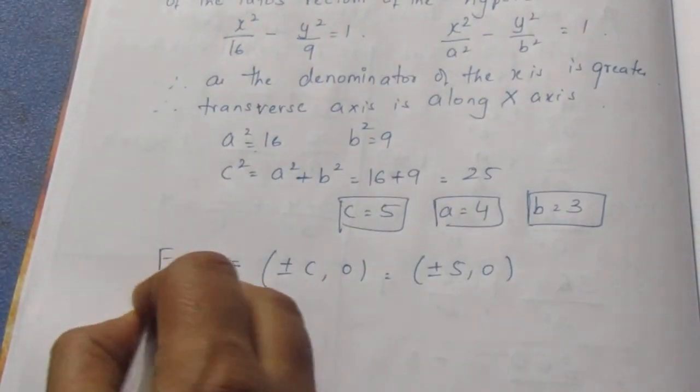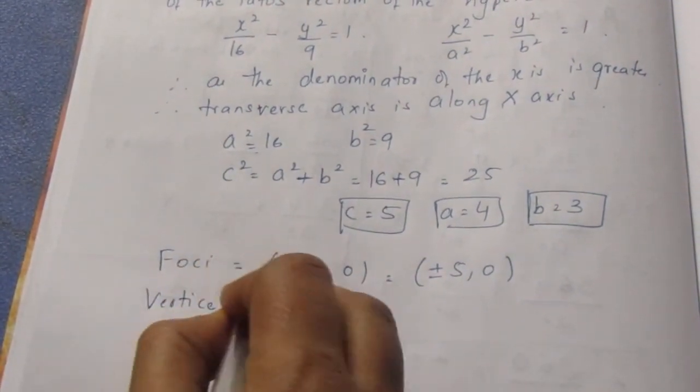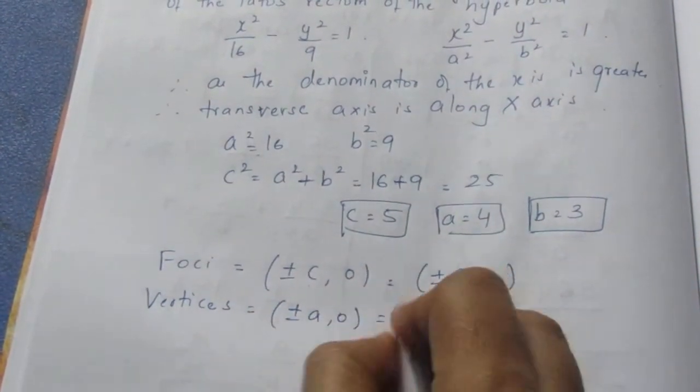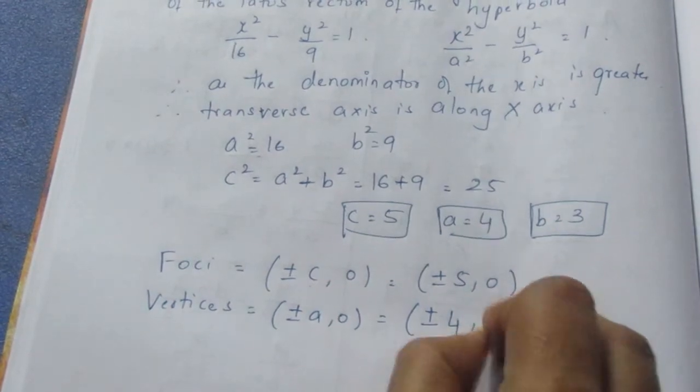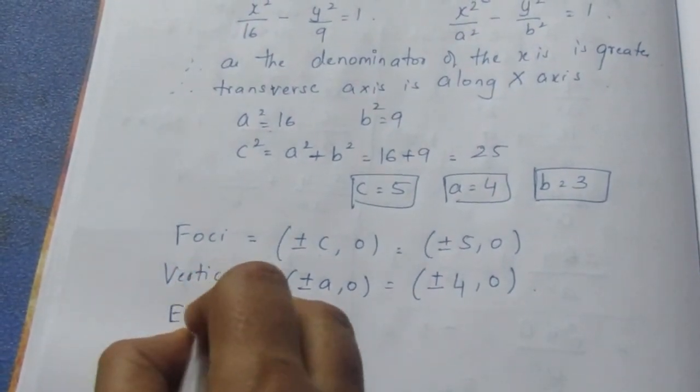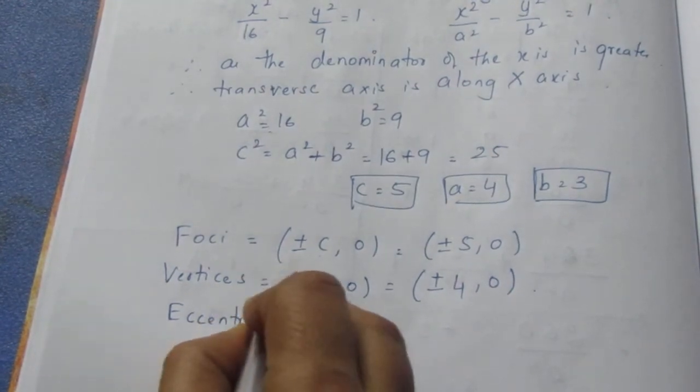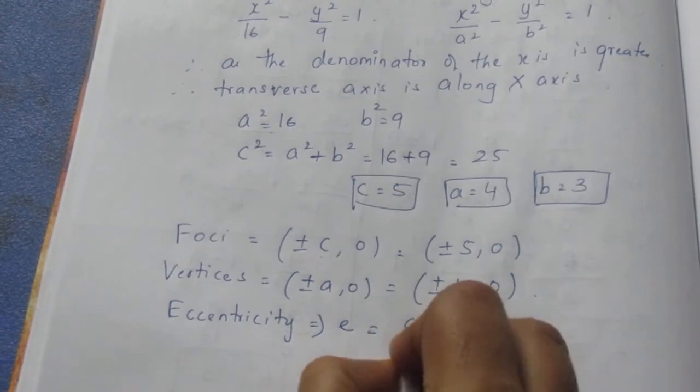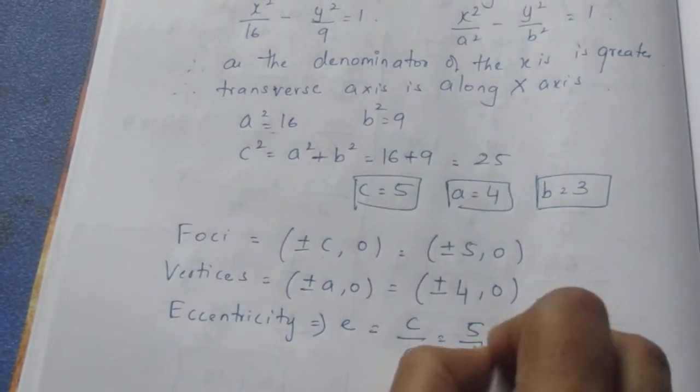Next, we need to find the vertices. The formula is (±a, 0), which is (±4, 0). Now for eccentricity, the formula is e = c/a, which is 5/4.